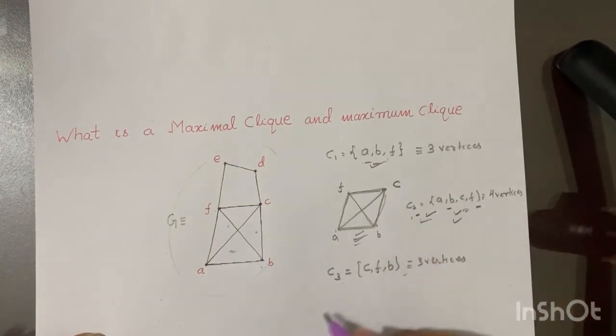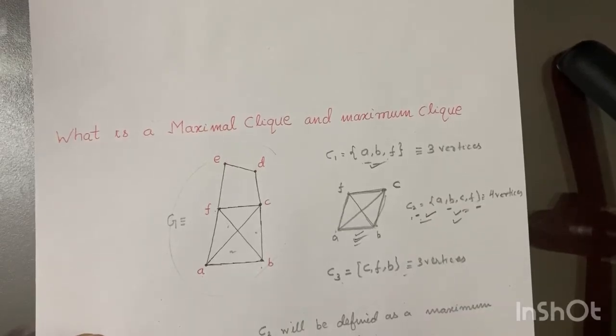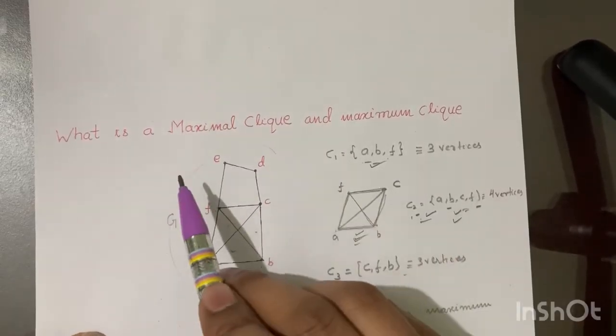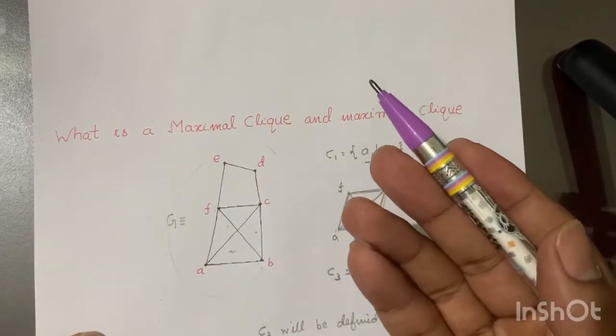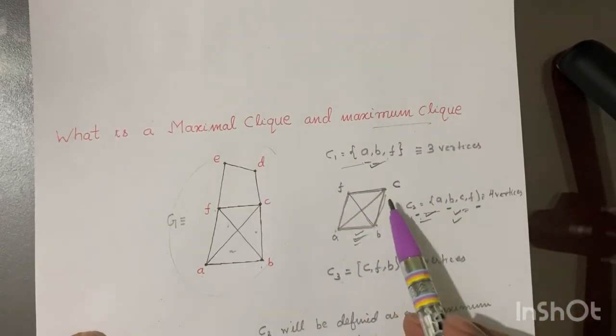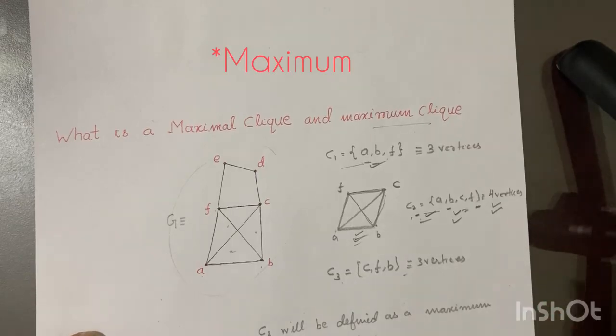So this clique C2 will be defined as a maximum clique. So if I tell you the definition according to the book: a clique that cannot be extended by a vertex is called a maximal clique. And what would be a maximum clique? Once you write all the cliques of the graph, the subset that has the most number of vertices in it, namely here 4, will be termed as the maximum clique. Thank you.